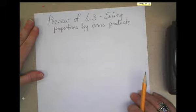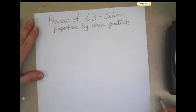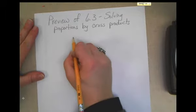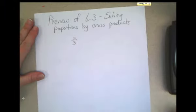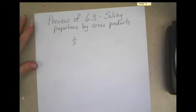And it has to do with solving proportions by using cross products. So we've talked about ratios. We've talked about a ratio like 2 to 3.